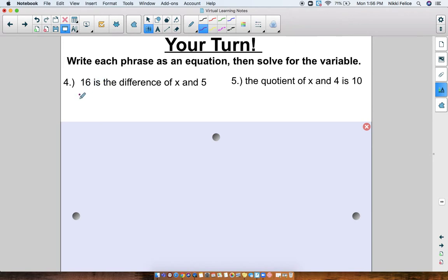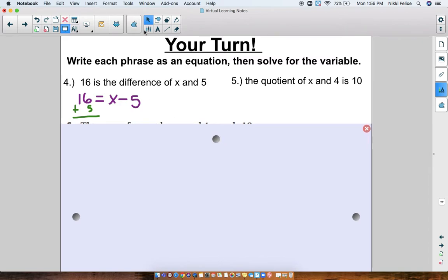16 is, that means 16 equals, because is means equals, the difference of x and 5. But we know that difference means subtraction, so that means we have x minus 5. And now if I wanted to solve this, this is subtraction, so I add 16 plus 5. And we get our answer to be, I guess I'll have to bring this down. Oh, I'm out of room. We get our answer to be 16 plus 5 is 21. So 21 is our value of x. First I wrote my equation, then I solved it.